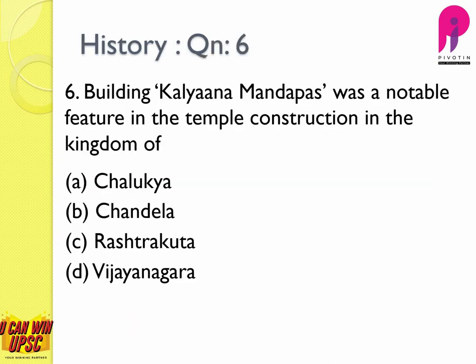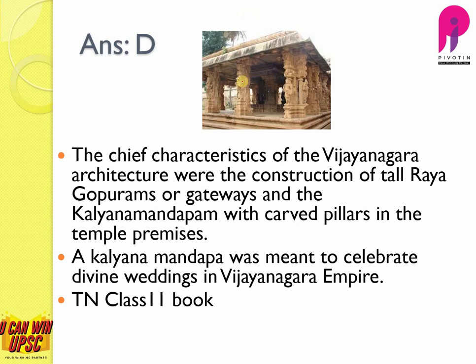Question number six: building Kalyanamandapa was a notable feature in temple construction in the kingdom of — this is another fact-based question — and the direct answer is D, Vijayanagara. Please read the Vijayanagara Empire in detail, as every year one or two questions are asked from this kingdom. In the Kalyanamandapa, celebrations of divine weddings take place.